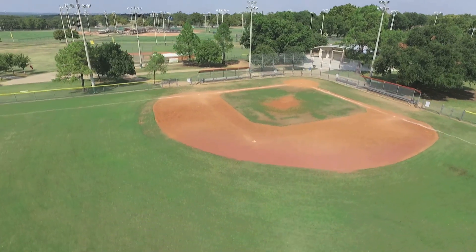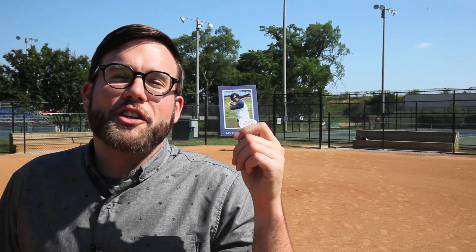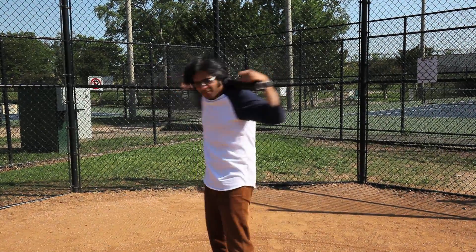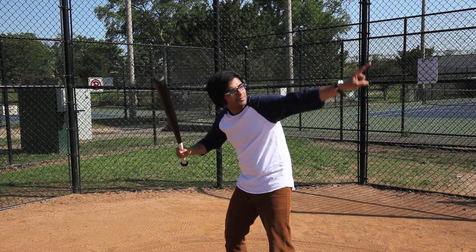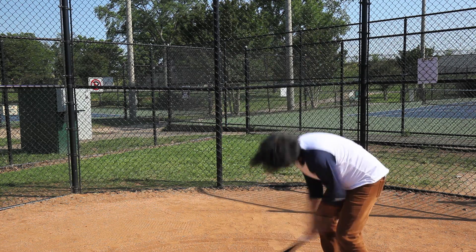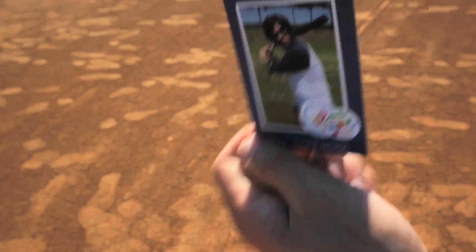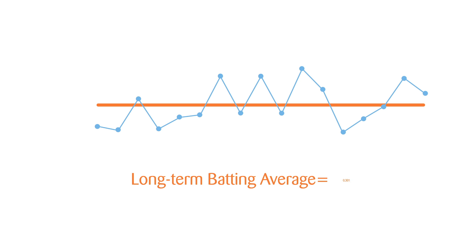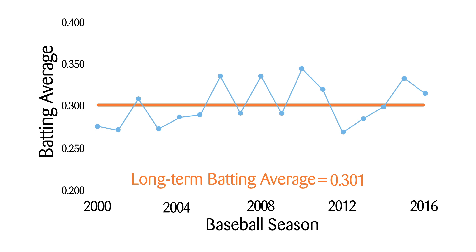In order to do this, we have to go somewhere you might not expect — to the baseball diamond! Consider Prebier's little-known baseball career. When Prebier goes up to bat, he can hit a home run, or he can bunt. More than likely, though, he's going to strike out. Prebier's at-bat is like baseball weather. Prebier's baseball card, on the other hand, tells us about his long-term average chance of getting a hit, also known as his batting average. This is like baseball climate — the long-term average of at-bats, just like climate is the long-term average of weather.